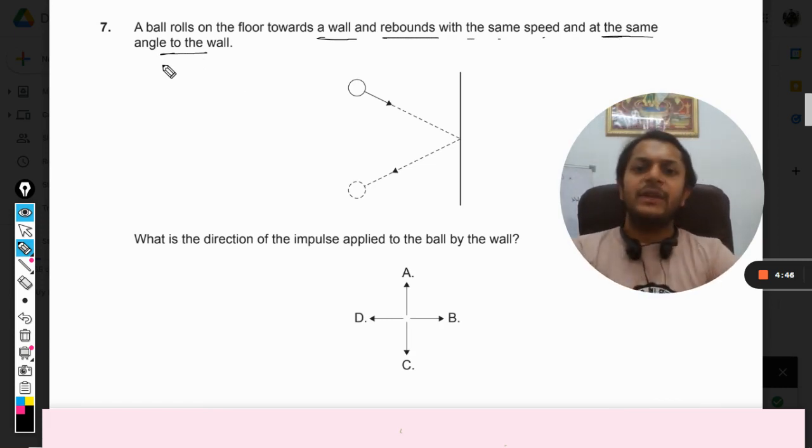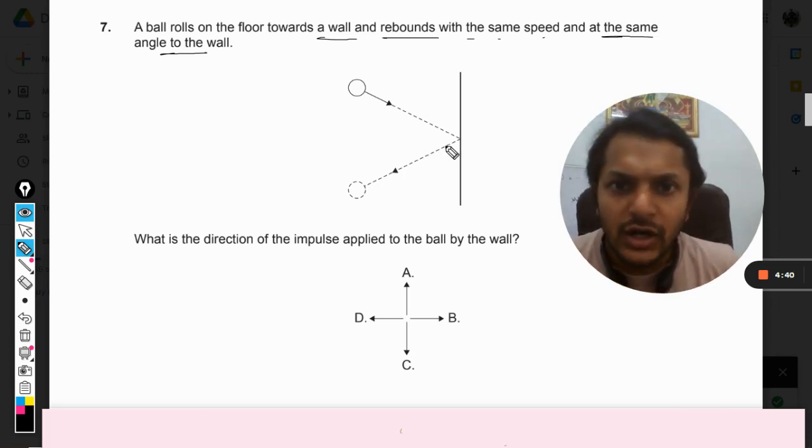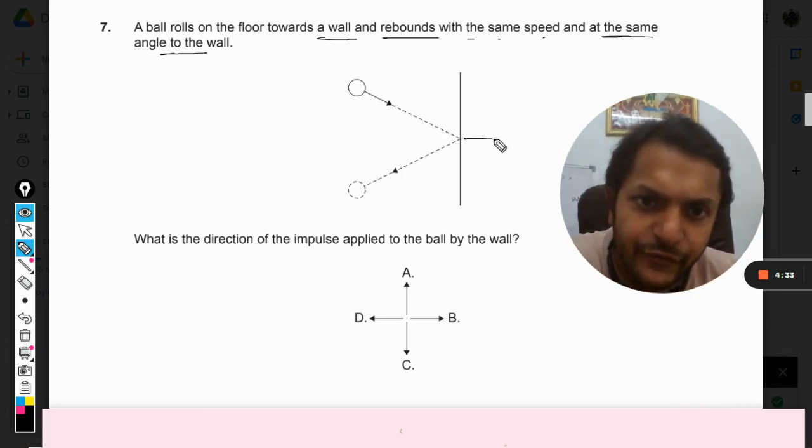of the impulse applied to the ball by the wall? So there will be two forces acting between the ball and the wall. The first force that would be acting is the force on the wall by the ball,